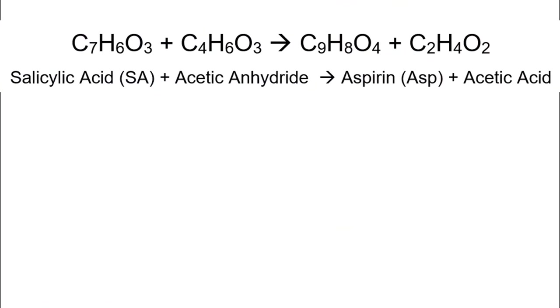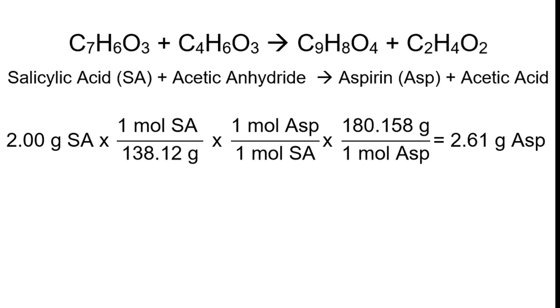If you remember from the beginning, we were starting with 2 grams of salicylic acid. That was our limiting reagent. If we determine our theoretical yield from starting with 2 grams of salicylic acid, we should expect to get 2.61 grams of aspirin.